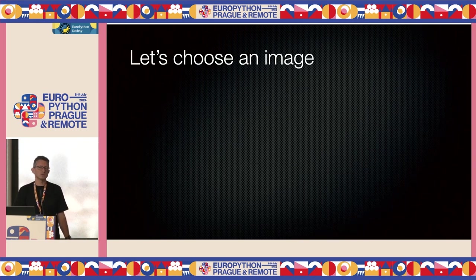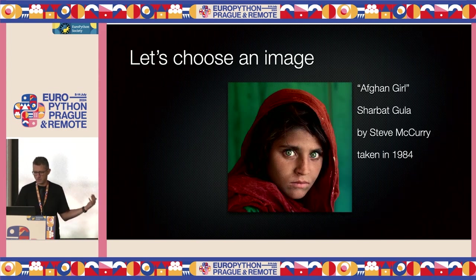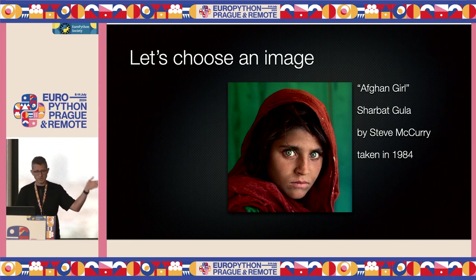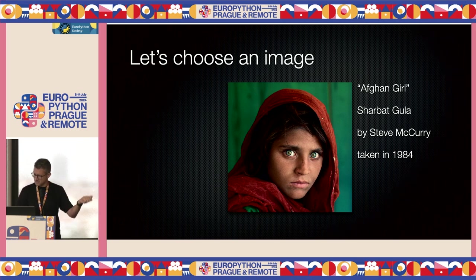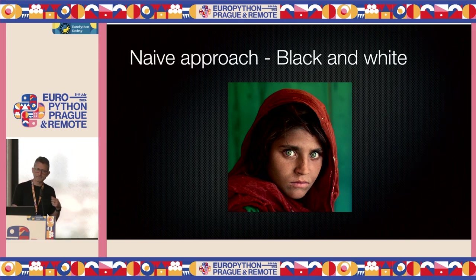We need an image to work on, so let's choose one. I chose this image — the Afghan Girl, a well-known image. She's actually called Sharbat Gula; this was taken in Afghanistan in 1984 by a photographer called Steve McCurry. I encourage you to go Google this image — there's an interesting story behind it — but we won't get into that.